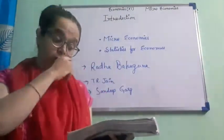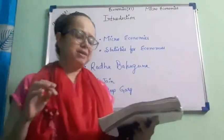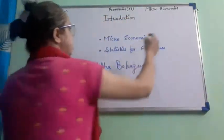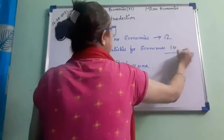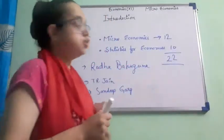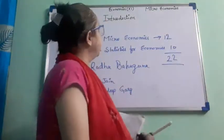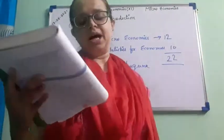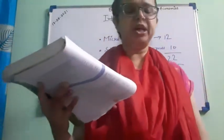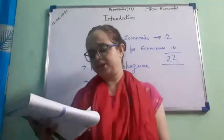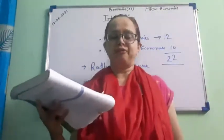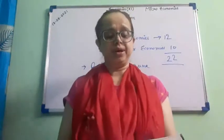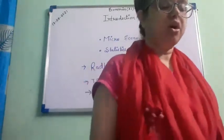The last chapter of microeconomics discusses simple applications of the tools of demand and supply, efficiency of the price mechanism, government intervention to affect market equilibrium, price ceiling, and price floor. In total, microeconomics has 12 chapters and statistics for economics has 10 chapters, making 22 chapters in all of Class 11 Economics.